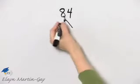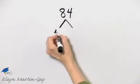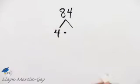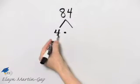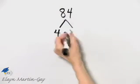In other words, I can see that 4 divides into 84, so I know 84 is 4 times, let's see, that would be 21.